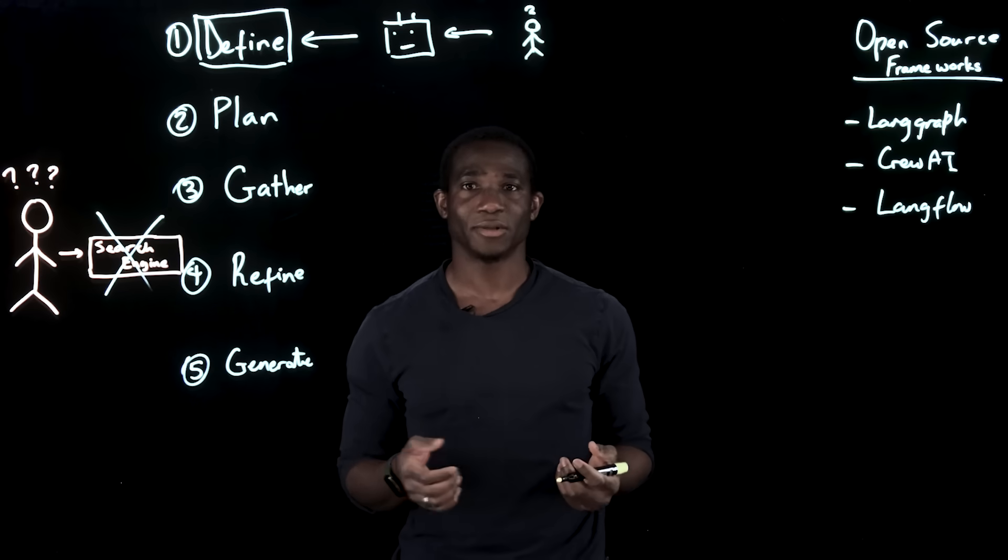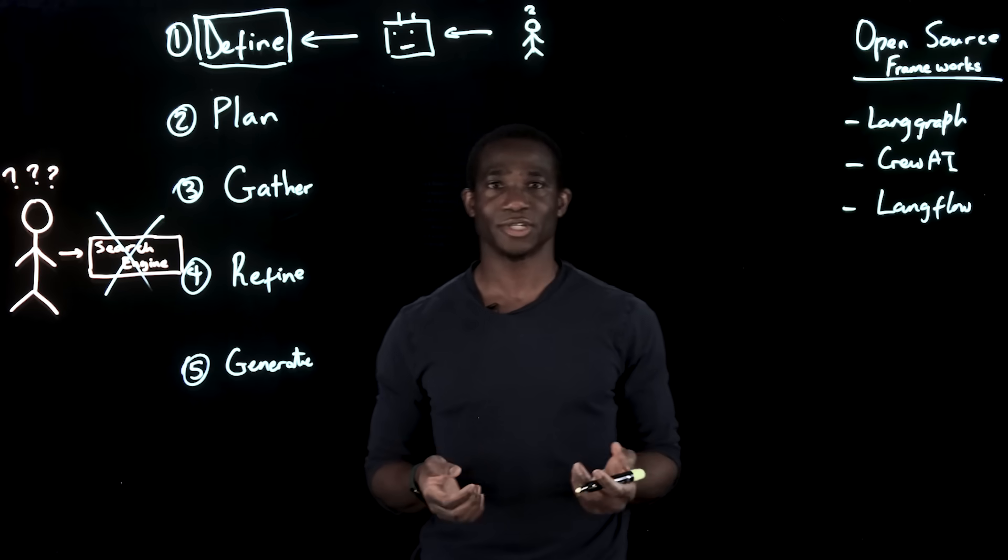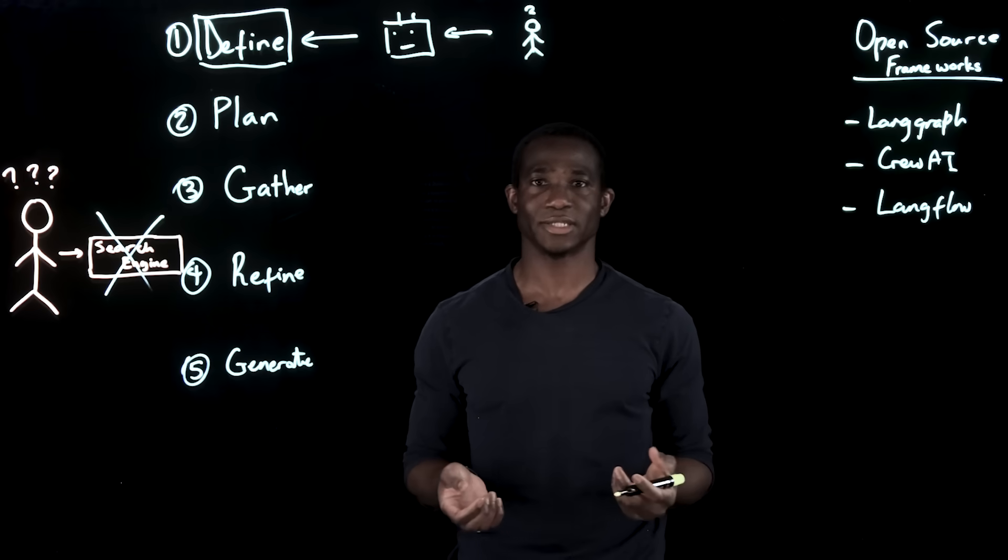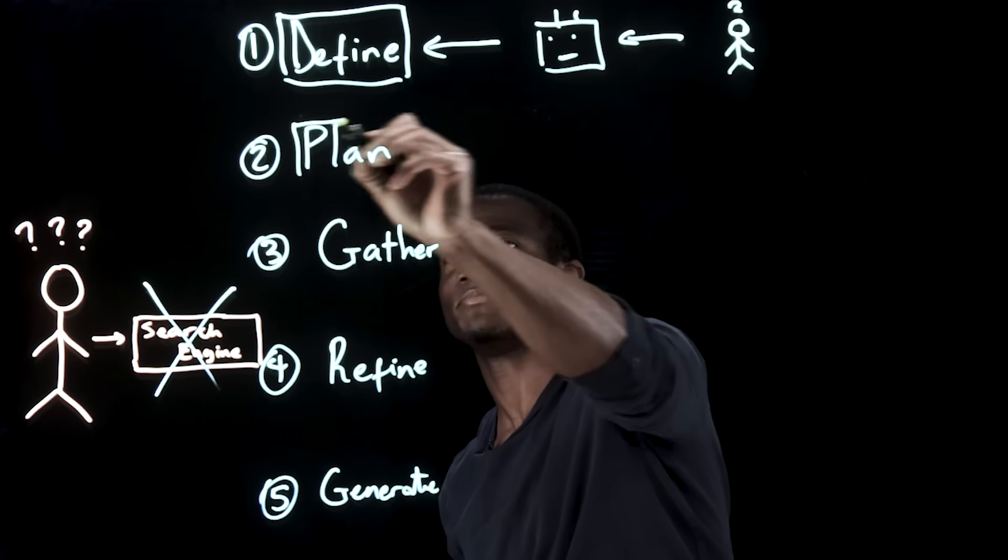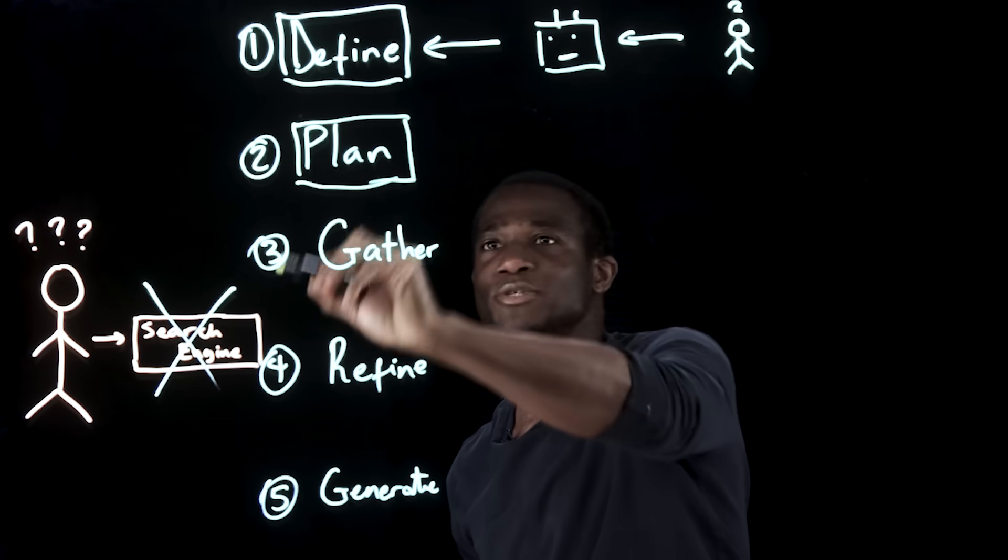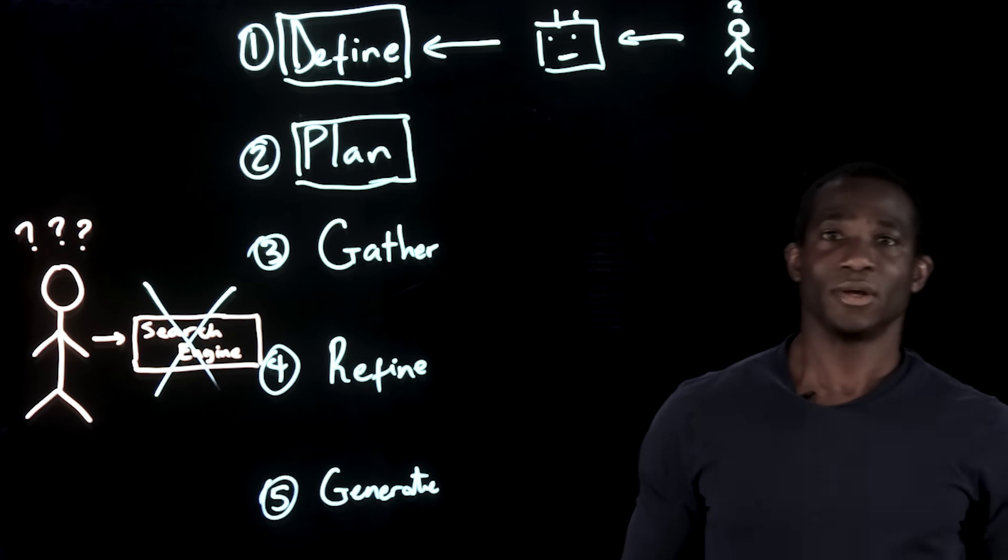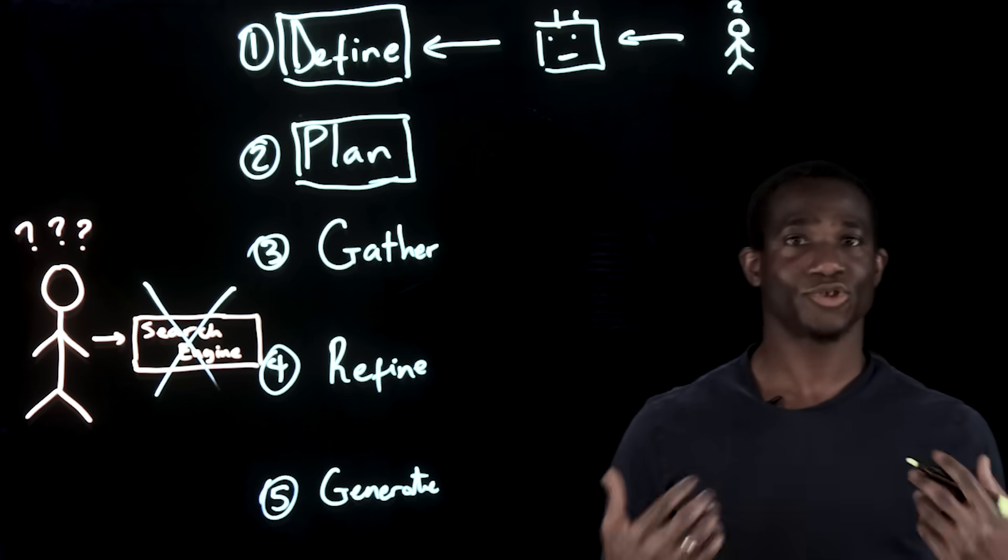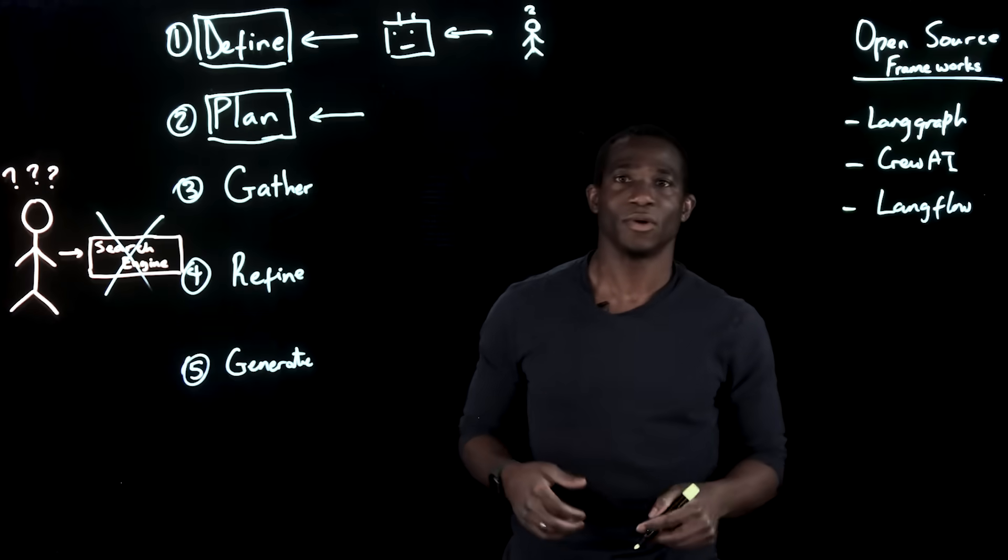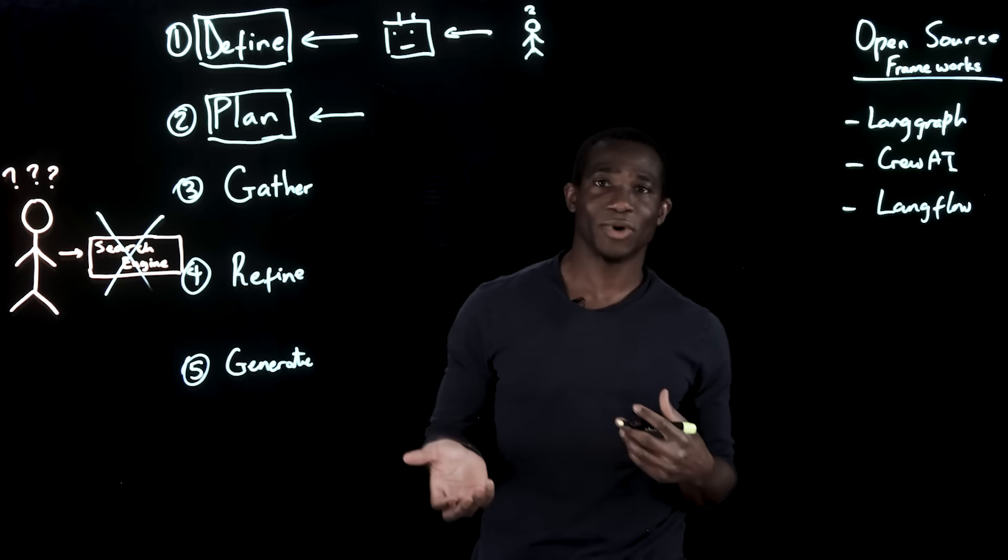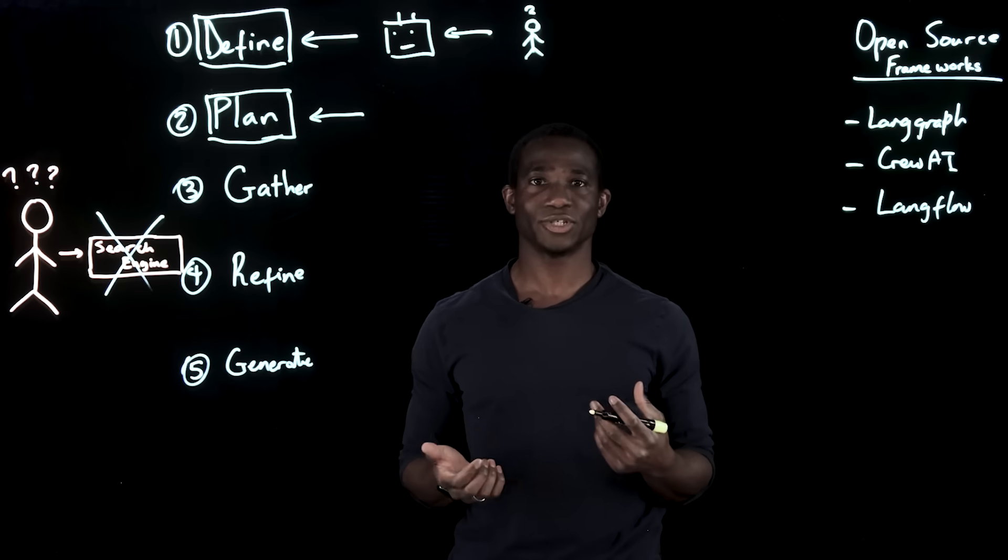This step is critical because just like in human research, clarity in defining objectives leads to better results. Onward to step two, defining a research plan. The role of this agent is to create a structured roadmap.